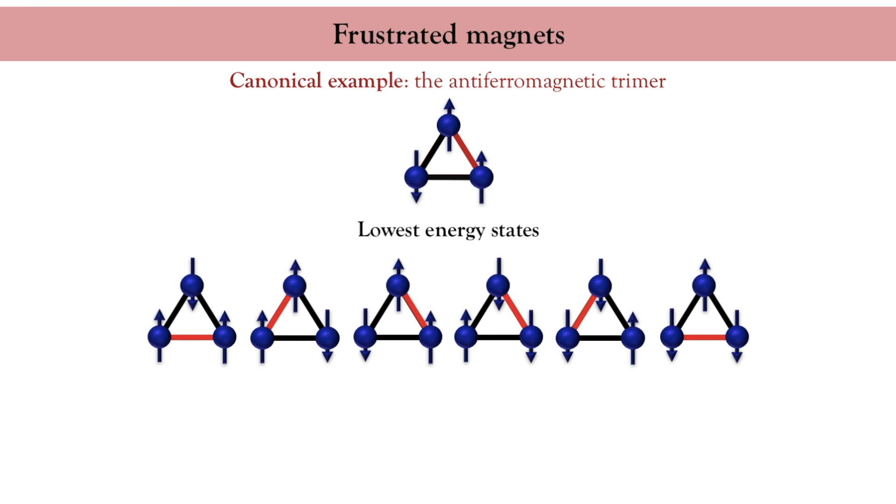Now imagine that instead of a trimer, I have a macroscopic sample with these magnetic frustrations. I end up with a highly degenerate ground state, which is nothing but the definition of a spin liquid. And this spin liquid can produce non-collinear magnetic configurations and supports exotic fractional excitations.